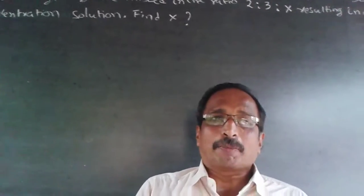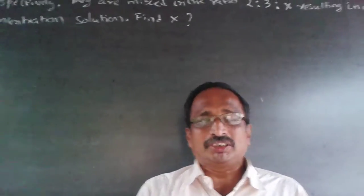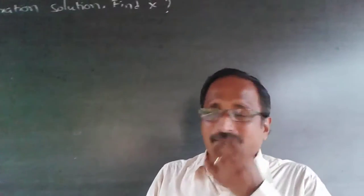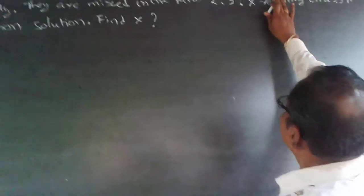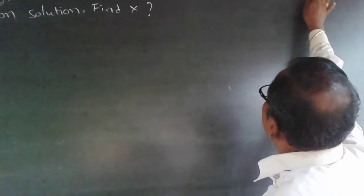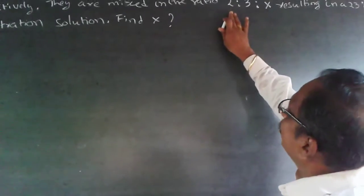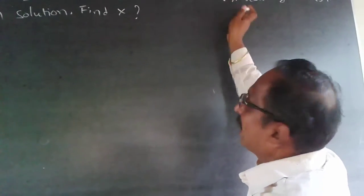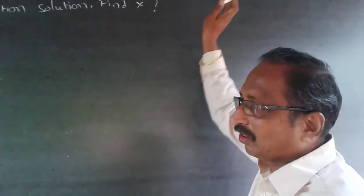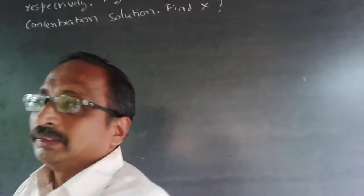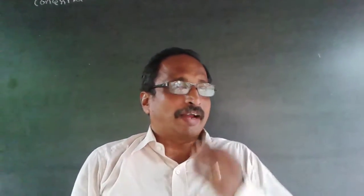On ratios and proportions. The ratios will always be maintained. When I say 2:3:x, whatever the mixture, it is always going to be 2:3. It will always be multiplied by the same factor.